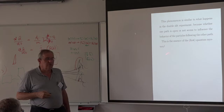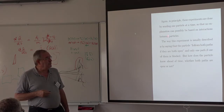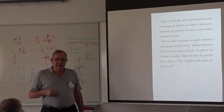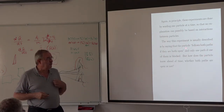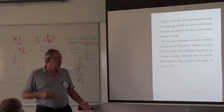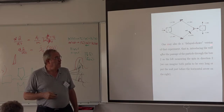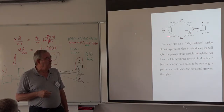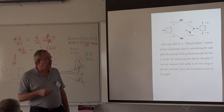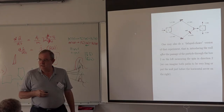This is the essence of what I call the first quantum mystery — the second being non-locality, which I'll explain tomorrow. These experiments are done particle by particle, so there is no explanation based on interaction. People say the particle follows both paths if both are open and only one if one is blocked. But how does the particle know ahead of time whether both paths are open or not? And you can do a delayed-choice version: put the wall after the passage of the particle through box two.